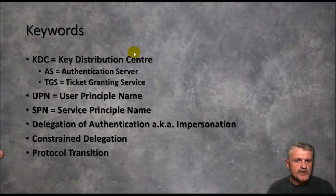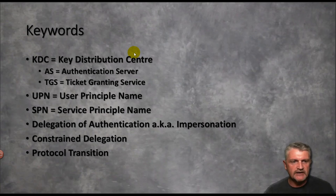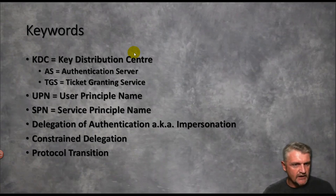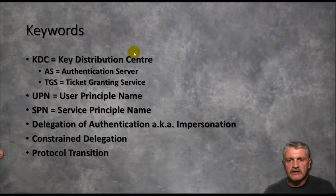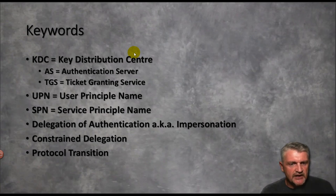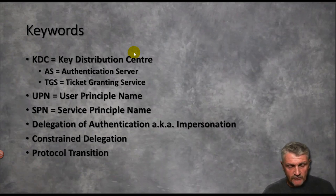We have the UPN, which is the user principal name — you as a user logging on. For example, my UPN in my environment will be Mervyn at SACS.0.0. We have the service principal name, SPN, which can be a printer on your network. There are also concepts like delegation of authentication, also known as impersonation, and constrained delegation — a limitation of what you can do.